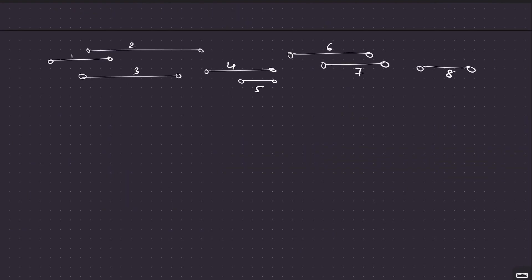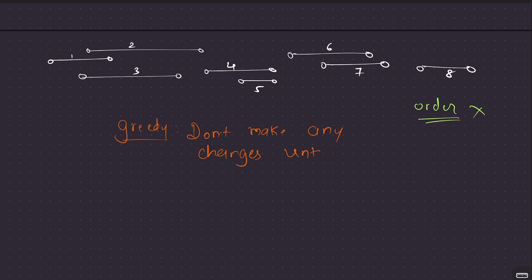Here's the greedy strategy: don't make any changes until there is no longer an overlap or intersection among the current group of segments. Since we eat sequentially, as long as consecutive segments share a common intersection, the same value of v can persist — no change needed. We only need to make a change when the new segment doesn't intersect with the running intersection of the current group.